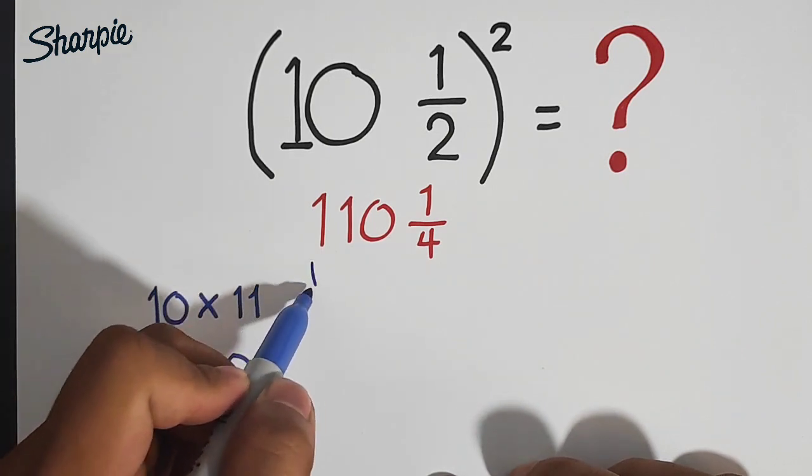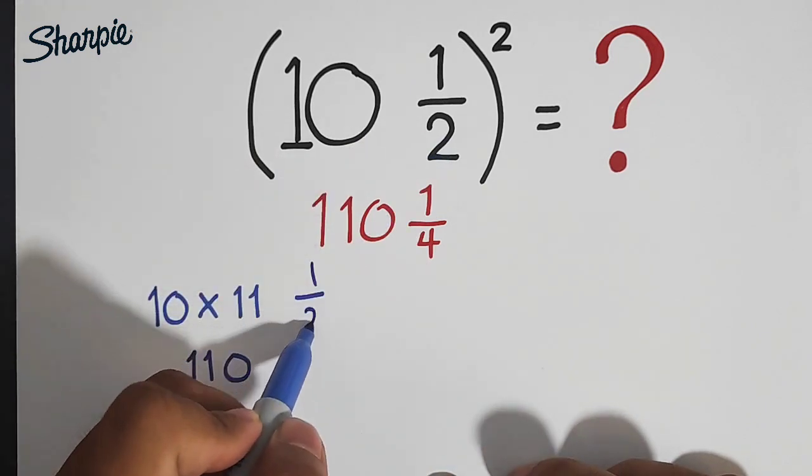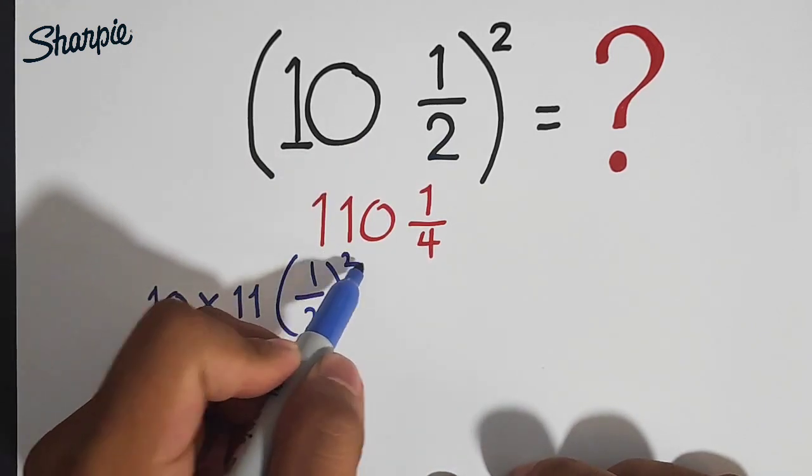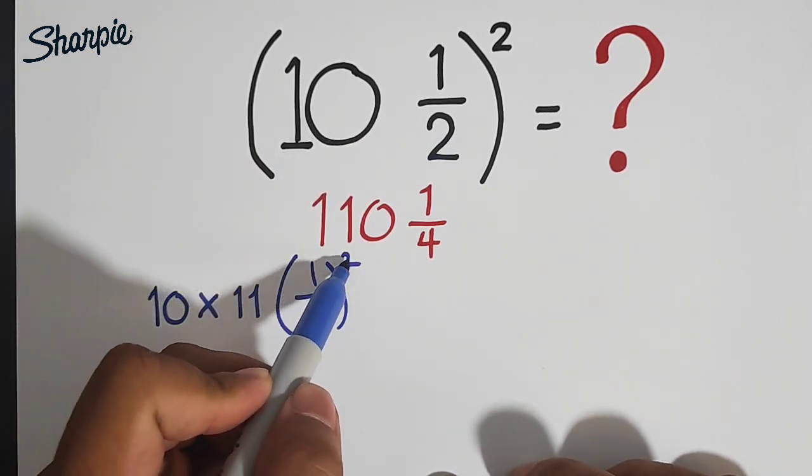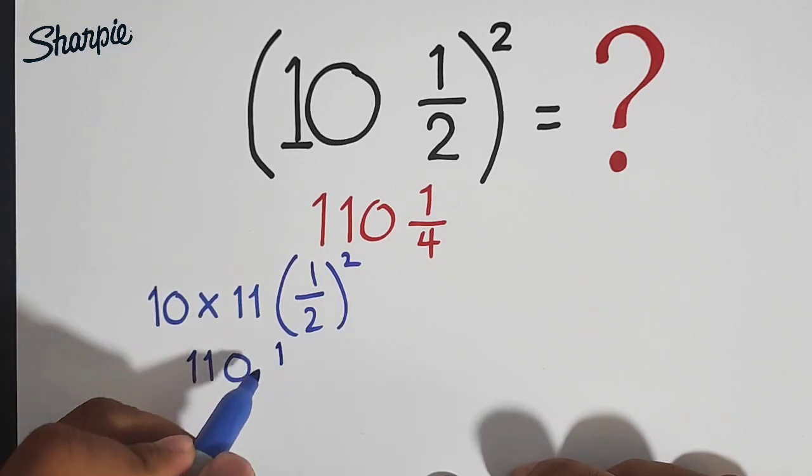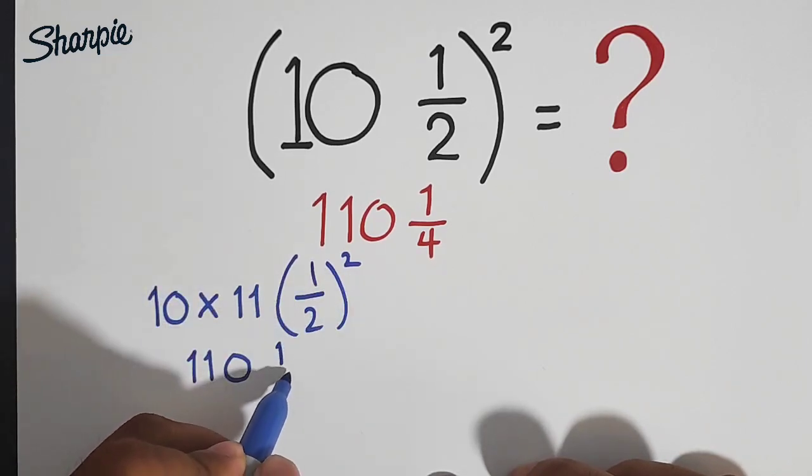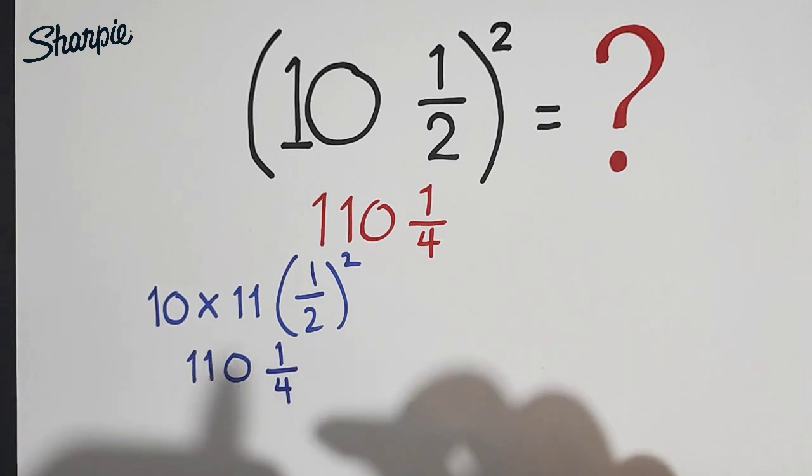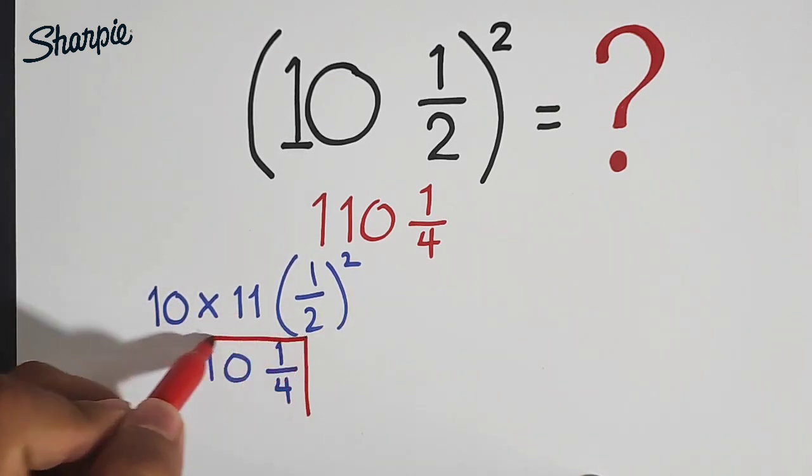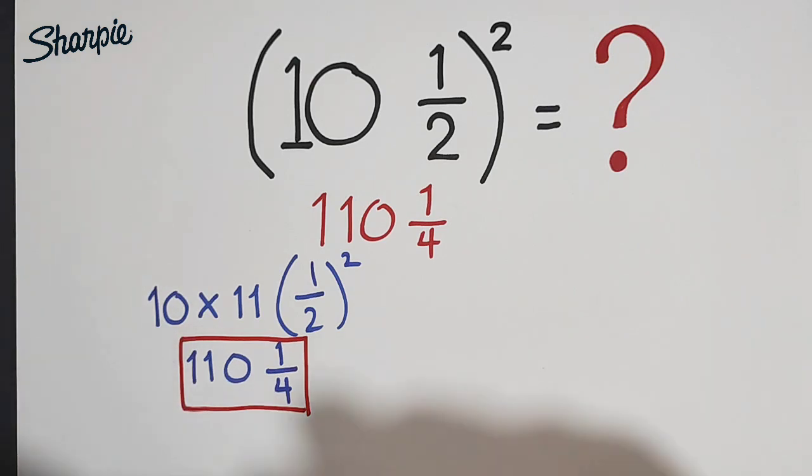We need to raise 1 half, the fraction, by the power of 2. And 1 squared is equal to 1. 2 squared is equal to 4. That's why we have this answer 110 and 1 fourth. So to verify our answer, whether it is correct, let's use the second method.